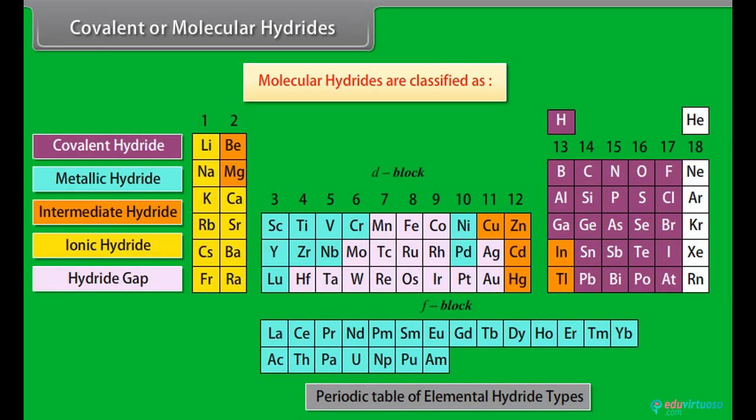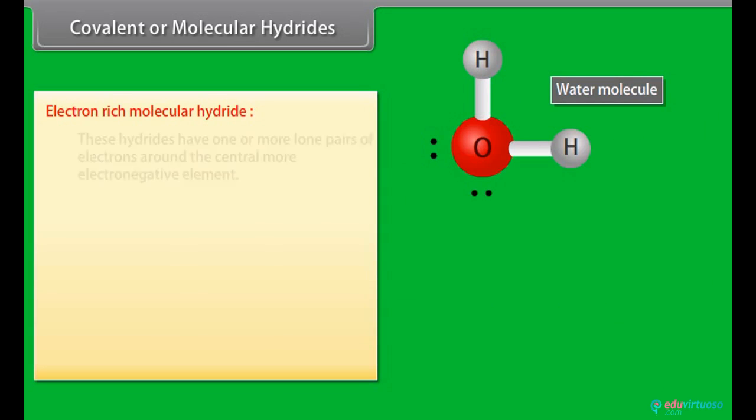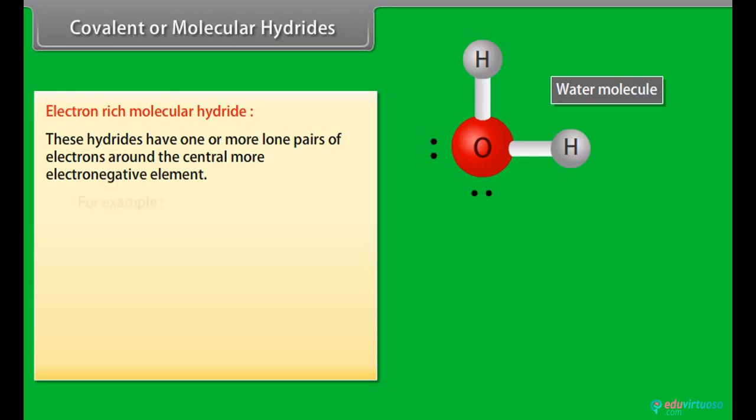Covalent or molecular hydrides: Molecular hydrides are classified as electron-rich molecular hydride. These hydrides have one or more lone pairs of electrons around the central more electronegative element. For example, water has two lone pairs.